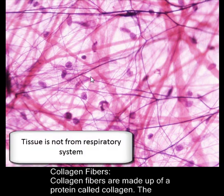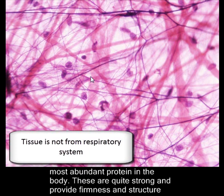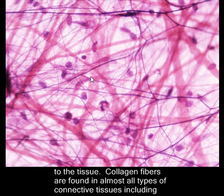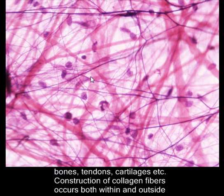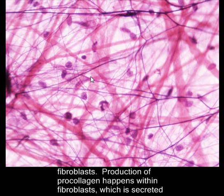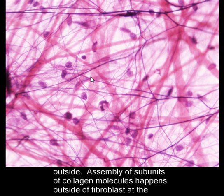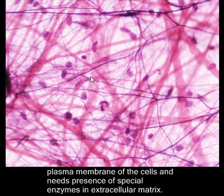Collagen fibers are made up of a protein called collagen, the most abundant protein in the body. These are quite strong and provide firmness and structure to the tissue. Collagen fibers are found in almost all types of connective tissues including bones, tendons, and cartilages. Construction of collagen fiber occurs within and outside the fibroblast. Assembly of subunits of collagen molecules happens outside the fibroblast at the plasma membrane of the cells, and requires the presence of special enzymes in the extracellular matrix.